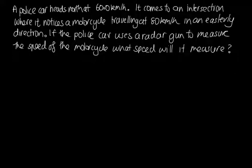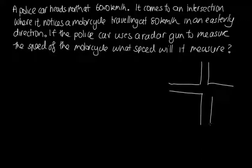Let's start by drawing a diagram. So here's the intersection. We've got a police car here traveling in a northerly direction at 60 kilometers per hour, and we've got a motorcycle traveling towards the east at 80 kilometers per hour.